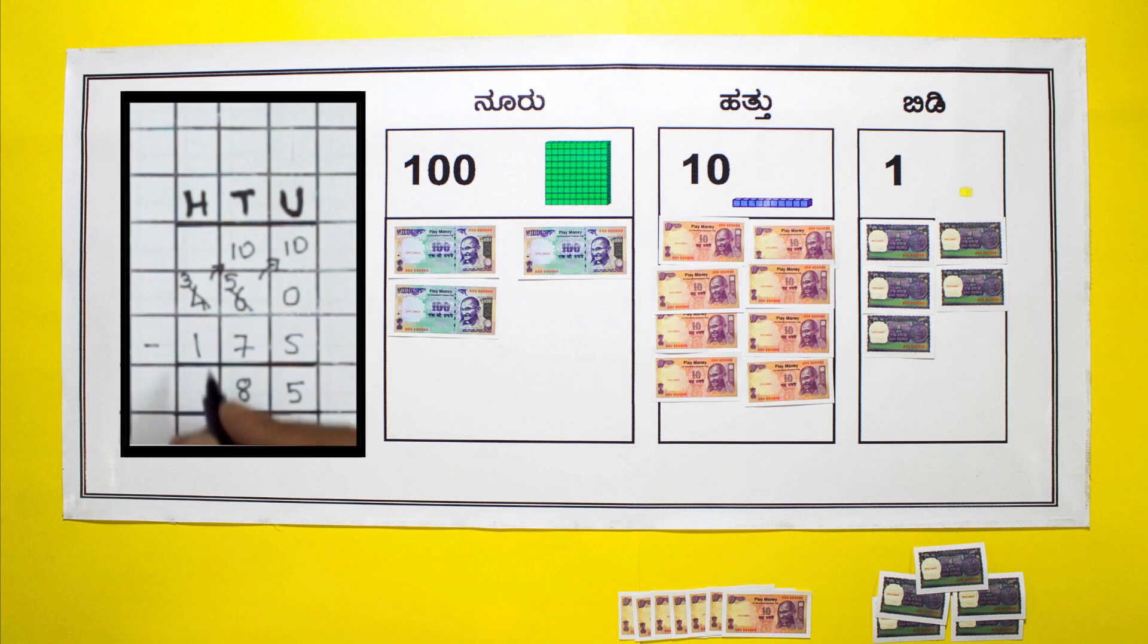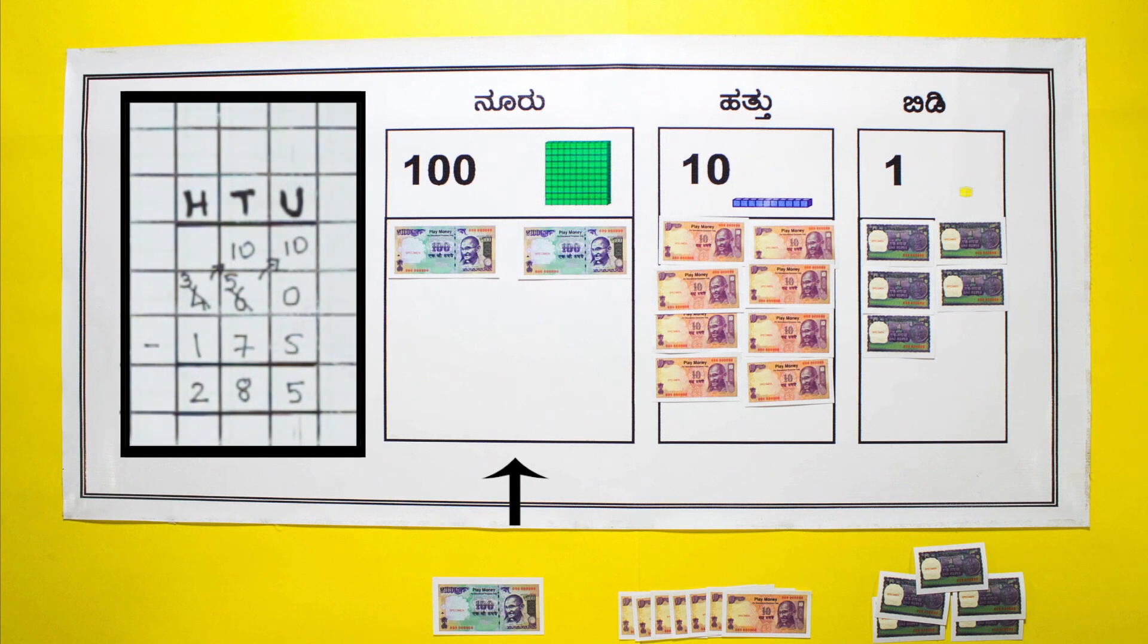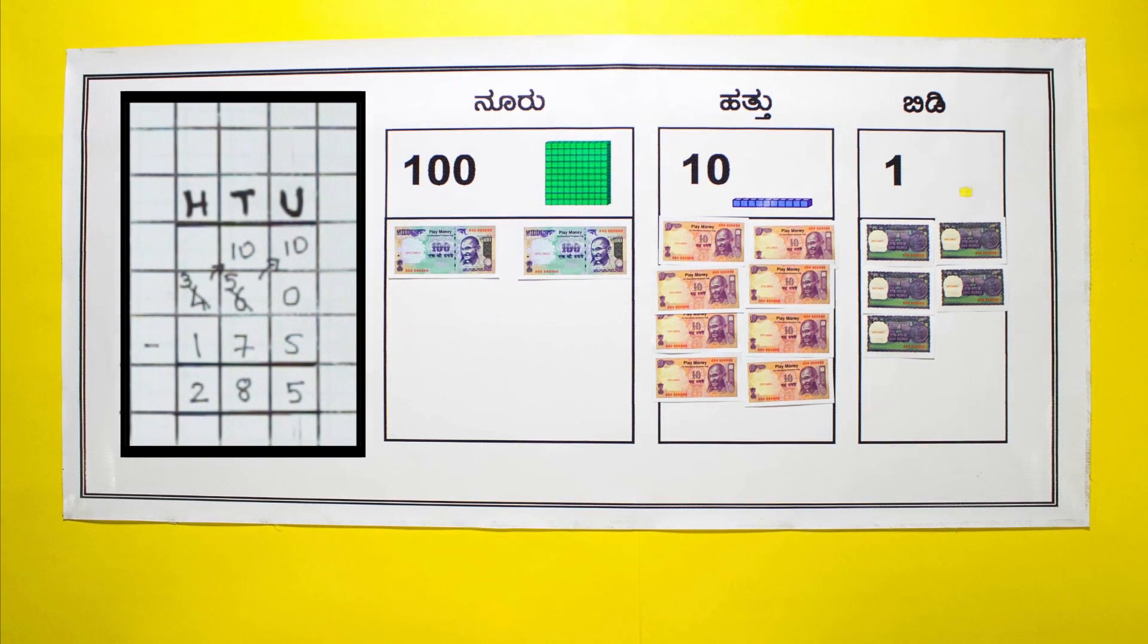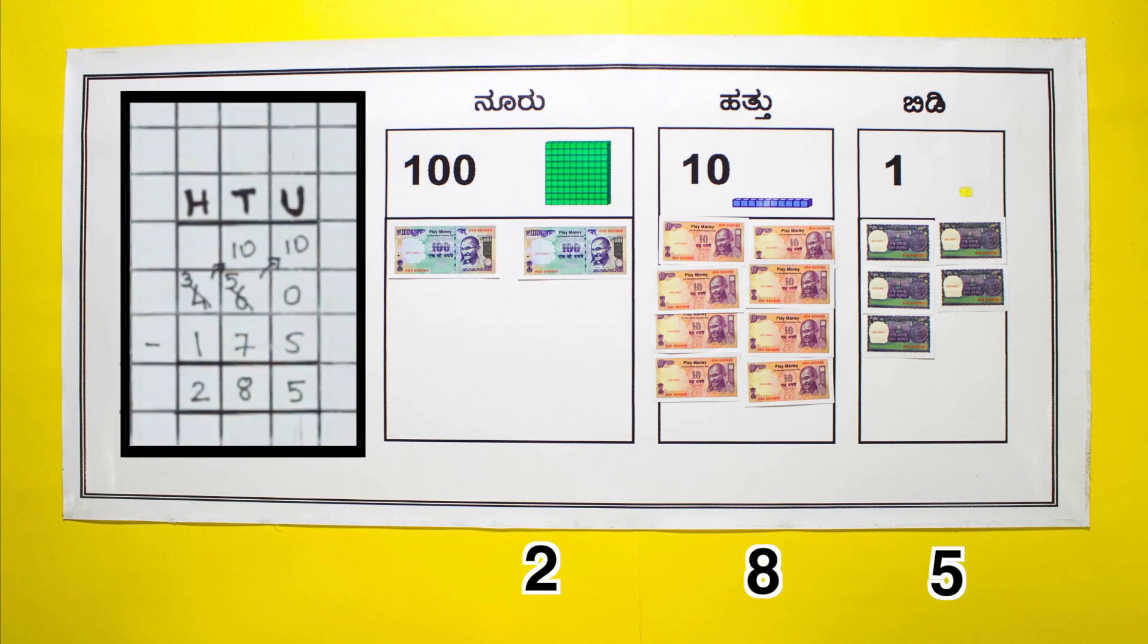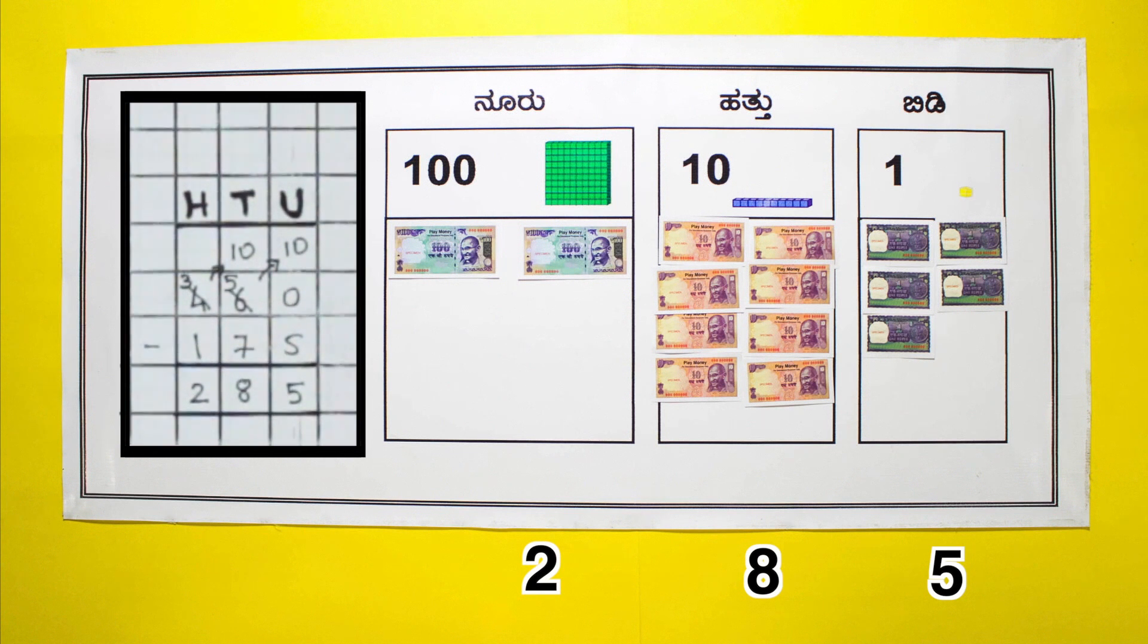Moving left to the hundreds place, three hundreds minus 100 leaves two hundreds. Move away the notes representing 175 after verifying that correct digits have been subtracted. 285 rupees remains with the student after giving away 175 rupees from 460 rupees.